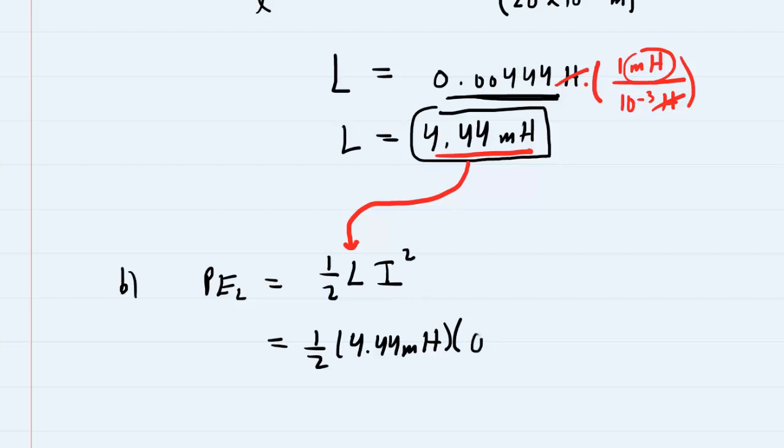We then multiply by the current, which was stated in the question as 0.5 amps. Don't forget to square that value. And when we do this, we get a potential energy of 0.555, and the unit will be in millijoules. So this is the correct answer to part B.